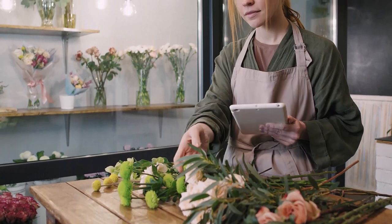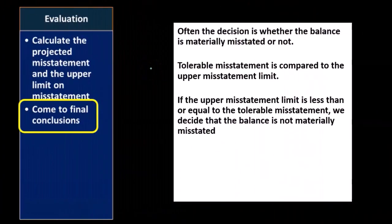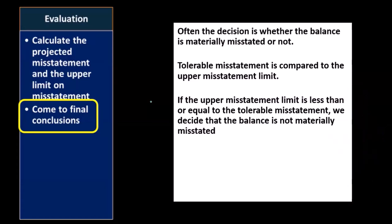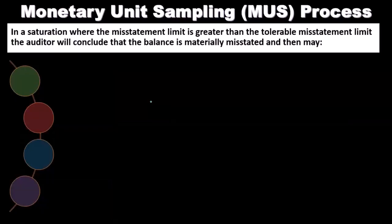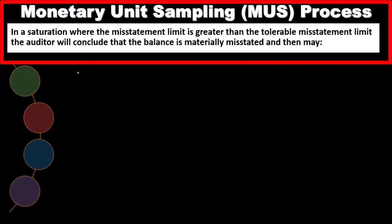The question is whether the balance is materially misstated or not — that's essentially the conclusion we're getting to. Tolerable misstatement is compared to the upper misstatement limit. If the upper misstatement limit is less than or equal to the tolerable misstatement, we decide that the balance is not materially misstated — and that's the conclusion we're hoping for. However, if the misstatement limit is greater than the tolerable misstatement limit, the auditor will conclude the balance is materially misstated.